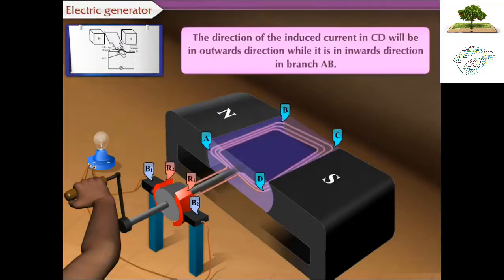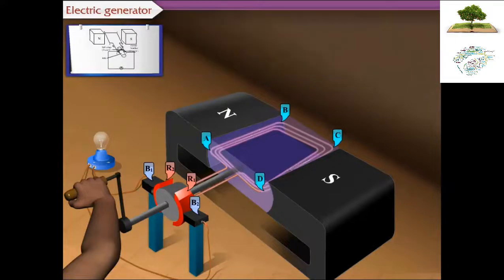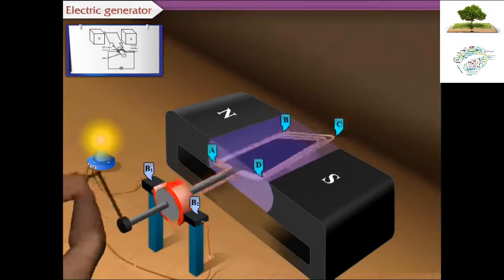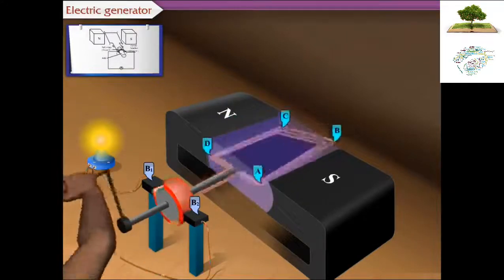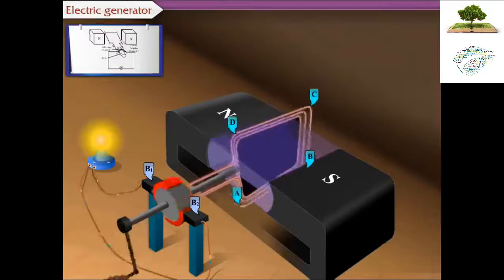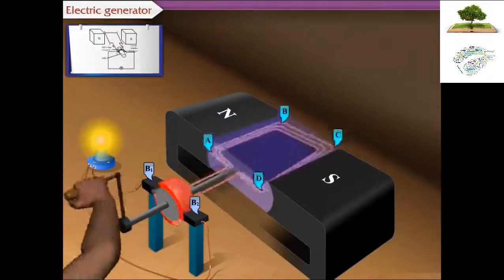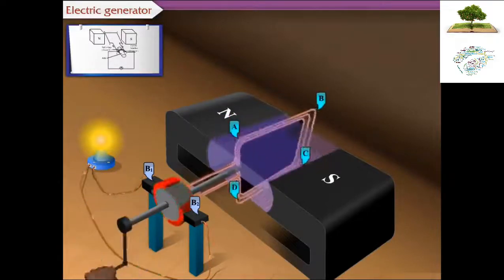The direction of the induced current in CD will be in outwards direction, while it is in inward direction in branch AB. The current in the outer circuit is from B1 to B2 in this half cycle also. Hence, the current in the external circuit flows in only one direction in both the half cycles. This process continues and a direct current is obtained.